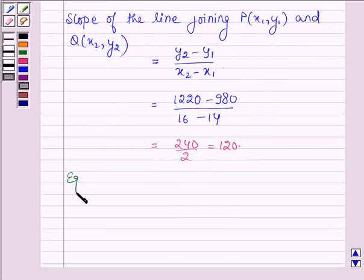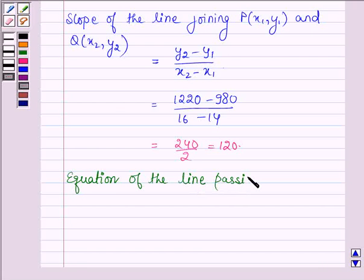Now equation of a line passing through the point X1, Y1 or X2, Y2, let us suppose X1, Y1 which is 14, 980